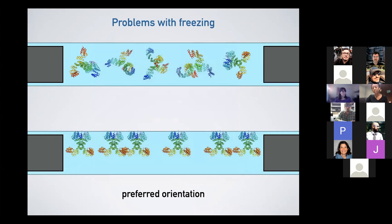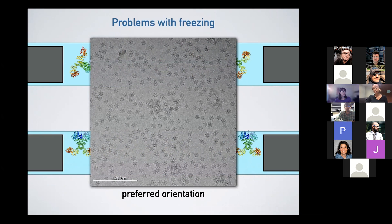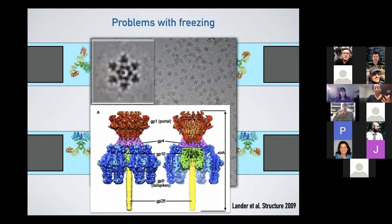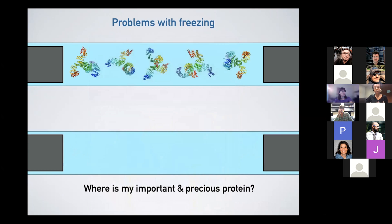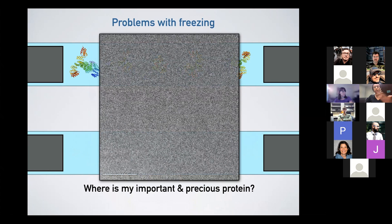You can also have preferred orientation — something that Gabe actually saw early during his PhD. I'm highlighting an example from one of his early papers in 2009, something our lab has been thinking a lot about in terms of how to overcome. You're seeing your sample essentially stick to the air-water interface, which is absolutely less than optimal, giving limited views and making it hard to process the sample. The final issue you can run into is not seeing your sample at all — it may have been entirely wicked away, leaving a completely blank image.